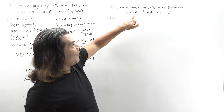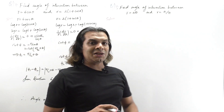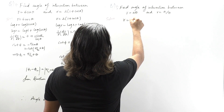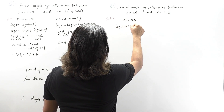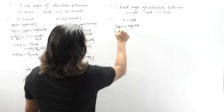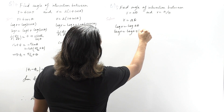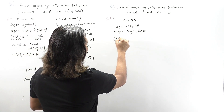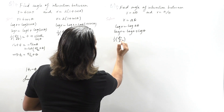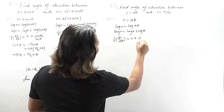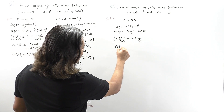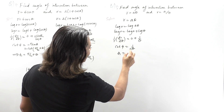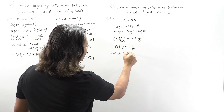Now for the next problem: find the angle of intersection between r = aθ and r = a/θ. For the first curve, apply log: log r = log a + log θ. Differentiating: (1/r)(dr/dθ) = 1/θ. So cot φ₁ = 1/θ.